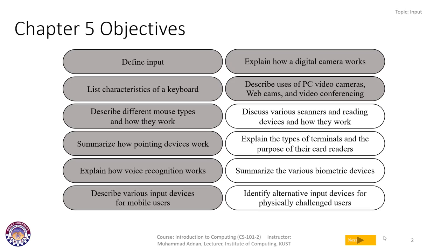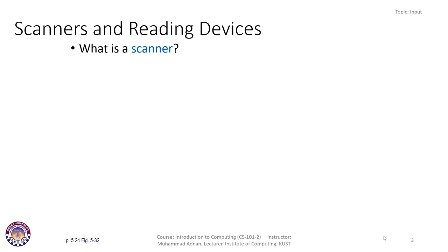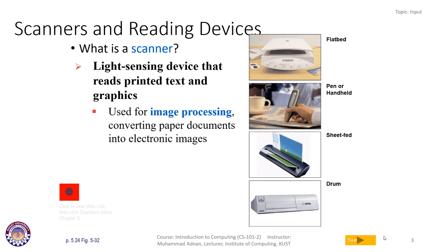Let us formally start our lecture. What is a scanner? A scanner is a light-sensing device that reads printed text and graphics. It is used for image processing and to convert paper documents into electronic images. We have flatbed scanners, pen or handheld scanners, sheet feed scanners, and drum scanners — there are a variety of different scanners available in the market.